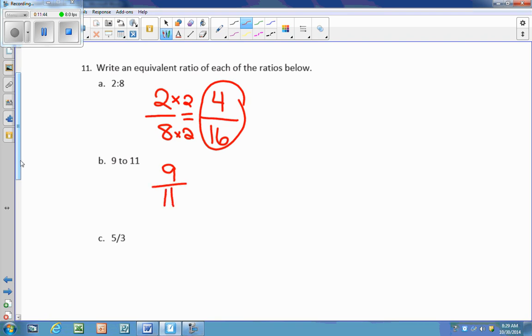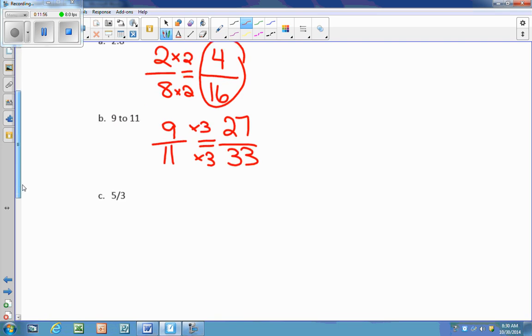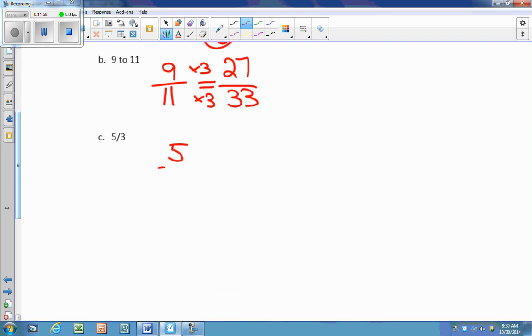9 elevenths, I can do the same thing, but I can choose any number that I want to multiply by. So let's do 3 this time. 3 times 9 is 27, and 3 times 11 is 33. Now for 5 thirds, I can multiply by 4, just randomly picking another number. And that's going to give me 20 twelfths.